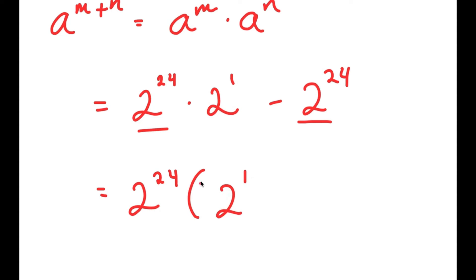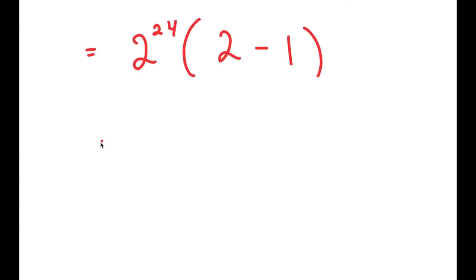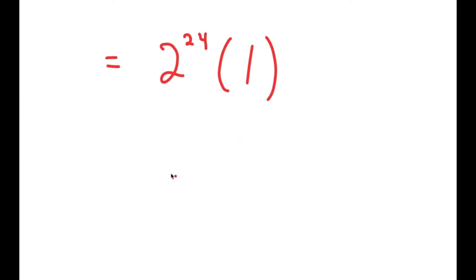Now I'm going to factor out 2 to the power of 24, since both terms contain it. Dividing through, I get 2 to the power of 24 times 2 to the power of 1 minus 1, which equals 2 to the power of 24 times 2 minus 1, which equals 2 to the power of 24 times 1. Anything times 1 is itself, so this is just 2 to the power of 24.